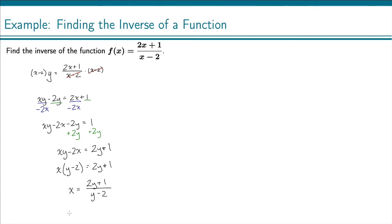Finally, we switch x and y. So we have y equals 2x plus 1 over x minus 2. And this thing that we ended up with is our inverse function. So we have f inverse of x equals 2x plus 1 over x minus 2.